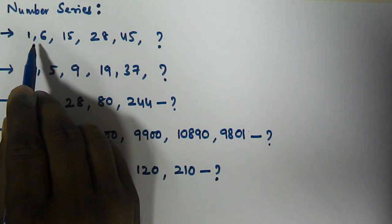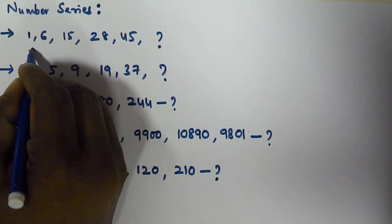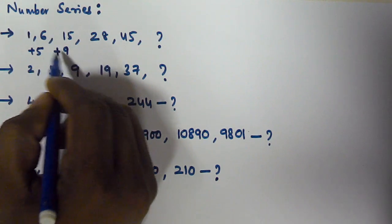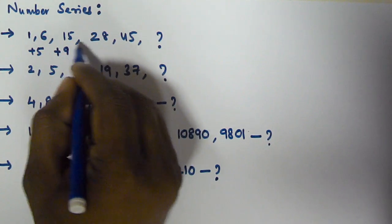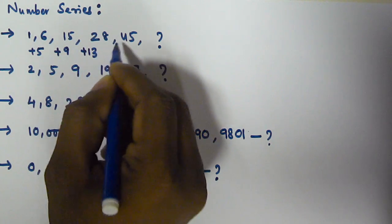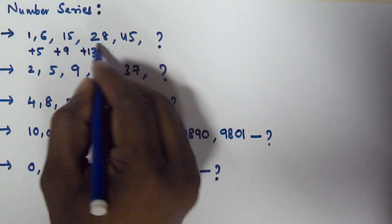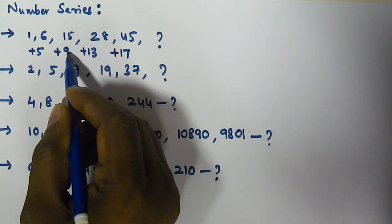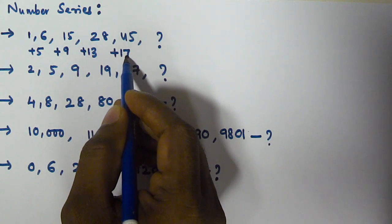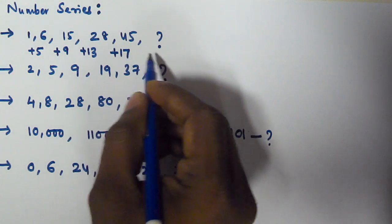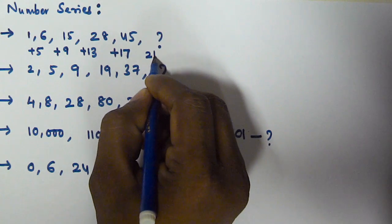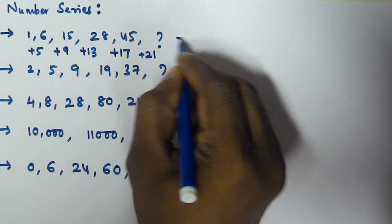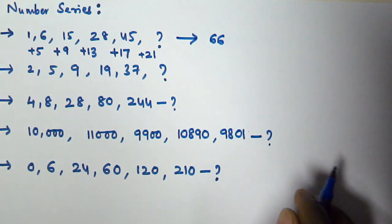For the first series, observe that 1 plus 5 gives 6, then plus 9 gives 15, then plus 13 gives 28, then plus 17 gives 45. The differences between the added values are all 4: 5, 9, 13, 17. So the next difference is 17 plus 4 equals 21. Adding 21 to 45 gives the next number: 66.